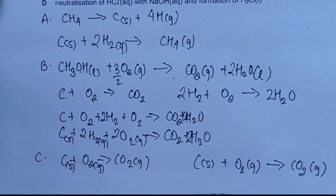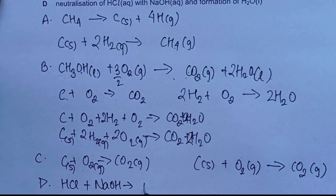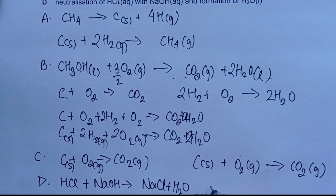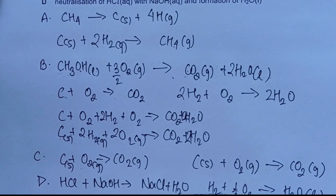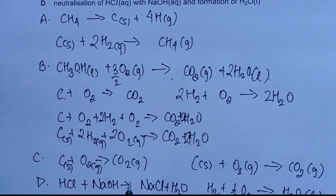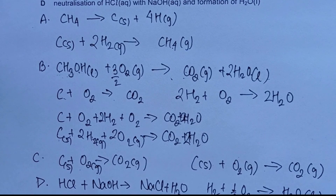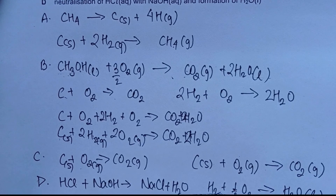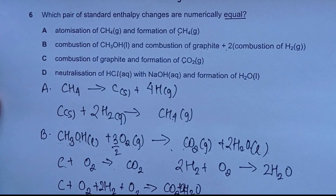Choice D: neutralization of HCl with NaOH versus formation of H₂O. The neutralization equation is HCl + NaOH → NaCl + H₂O. Formation of H₂O: H₂ + ½O₂ → H₂O. In the first equation, HCl, NaOH, and NaCl are all compounds with non-zero enthalpy values, while in the second only H₂ and O₂ (elements) appear as reactants. These cannot be equal, so choice C remains the correct answer.